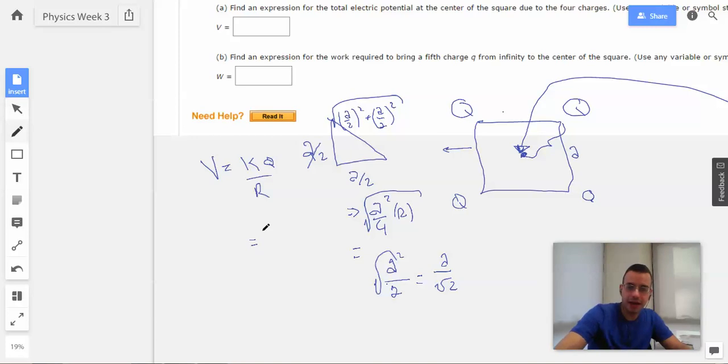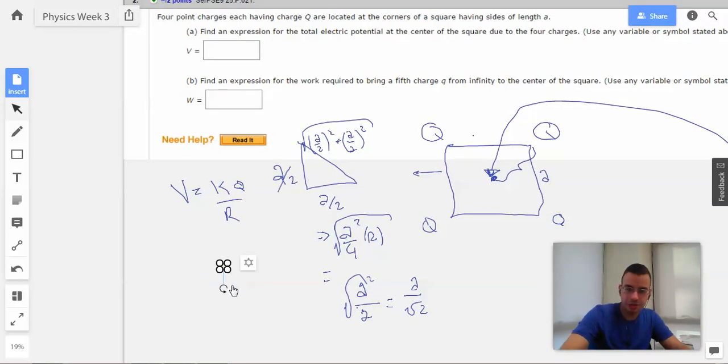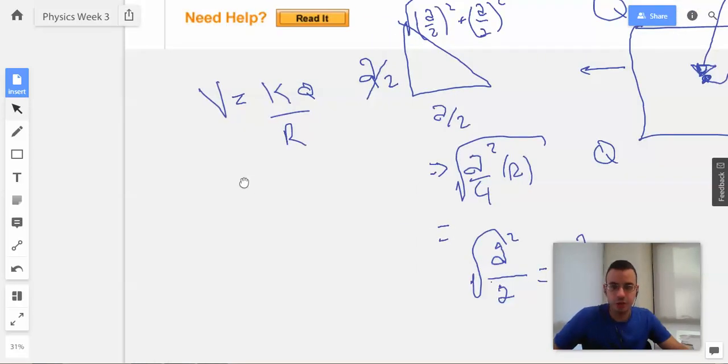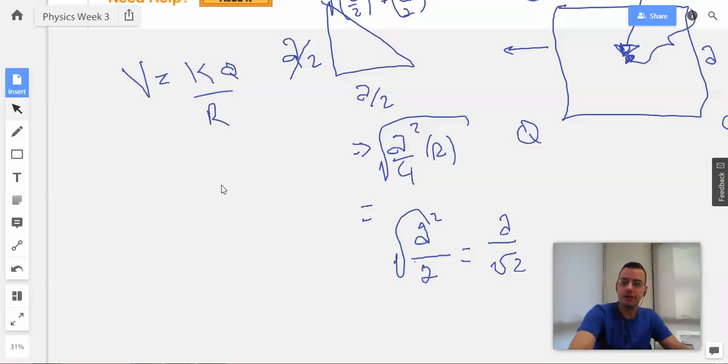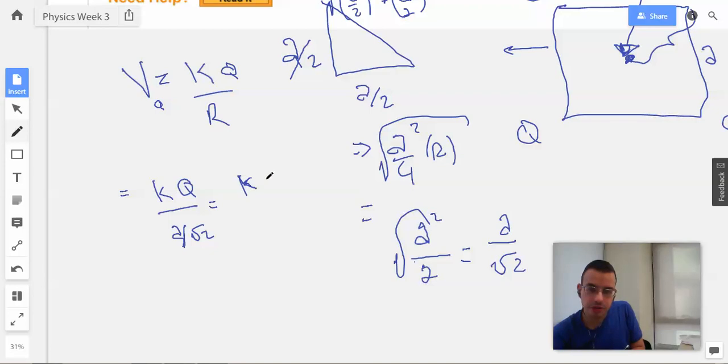So, I know you're not supposed to have radicals in the denominator. Or, as I like to say, no hippies in the basement. But I have a feeling it's going to work itself out. Alright, so then the voltage for one of the Q's will be KQ over A over square root of 2, which equals KQ over A square root of 2. Because when you divide by a fraction, you multiply by the reciprocal.